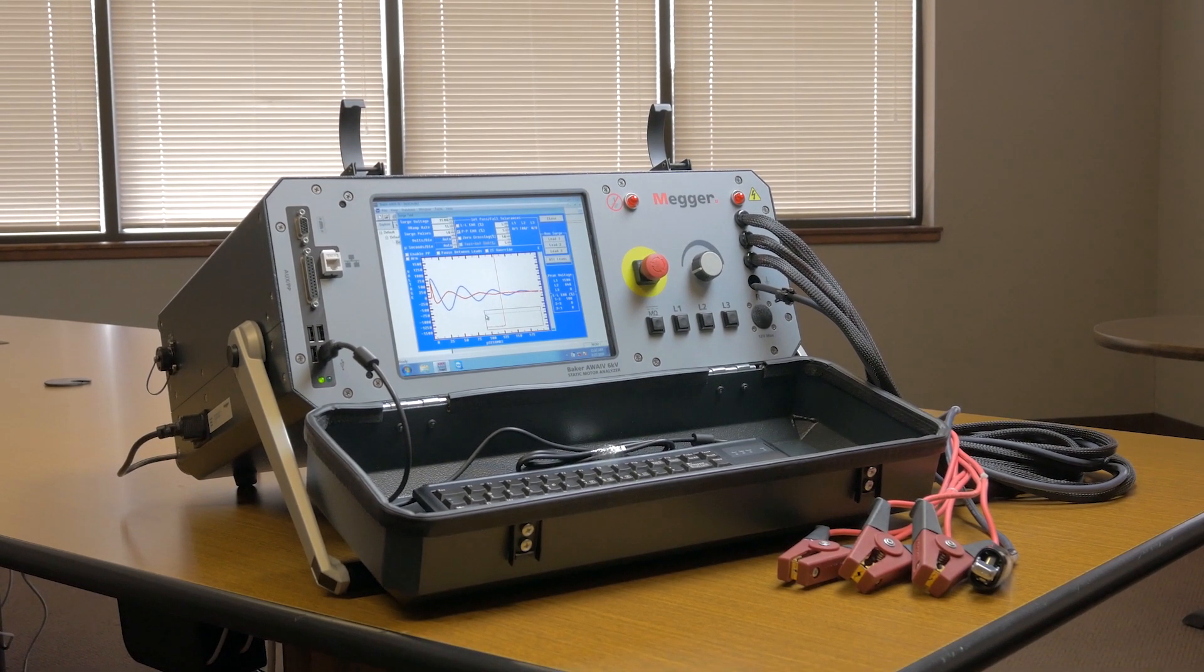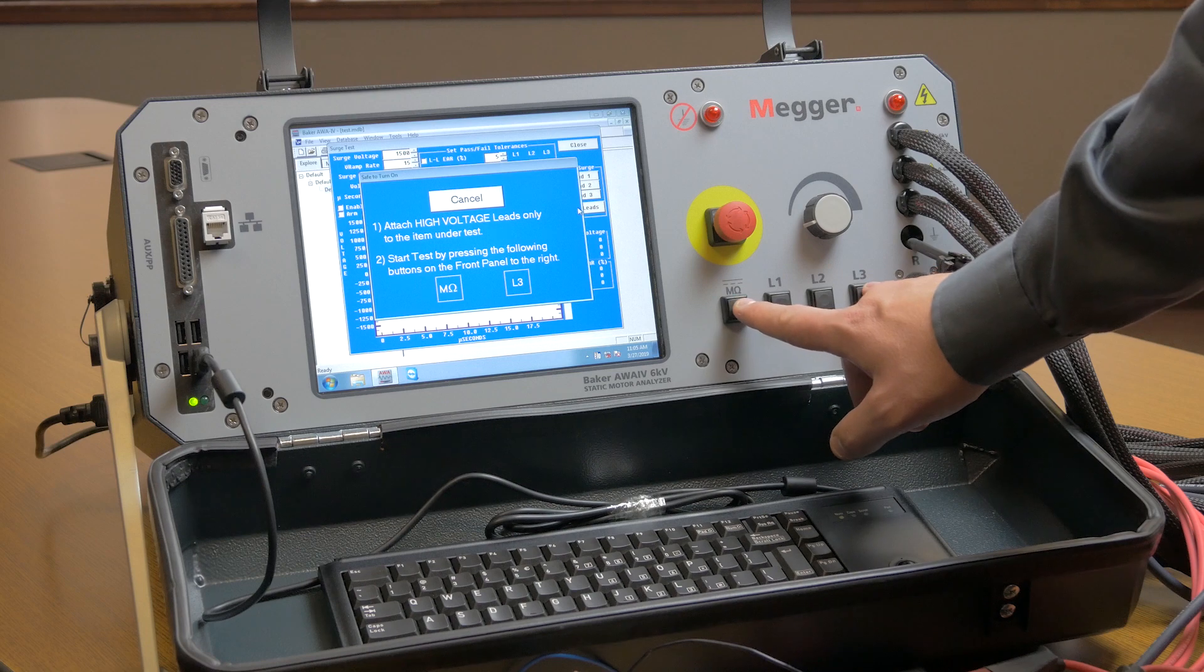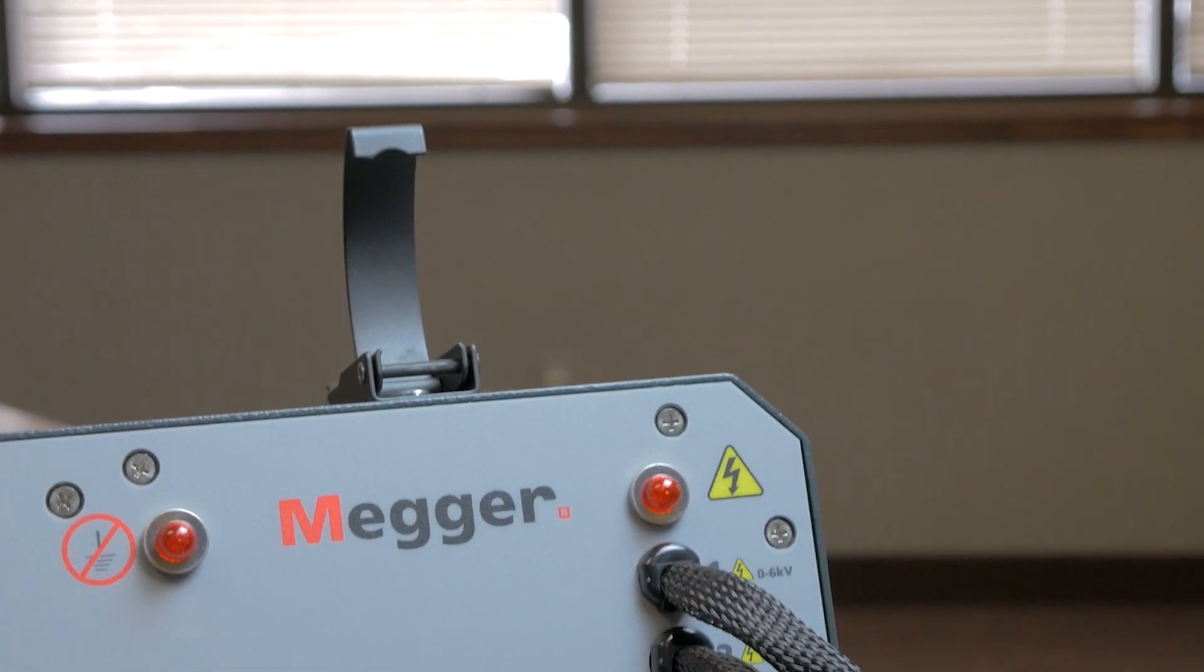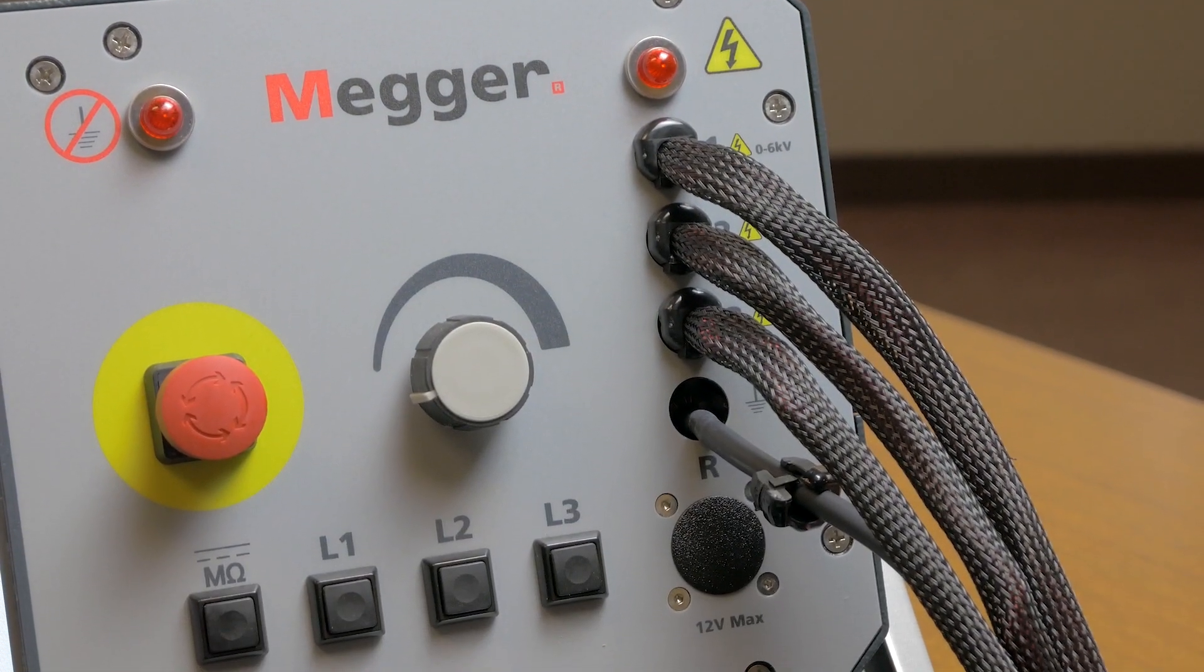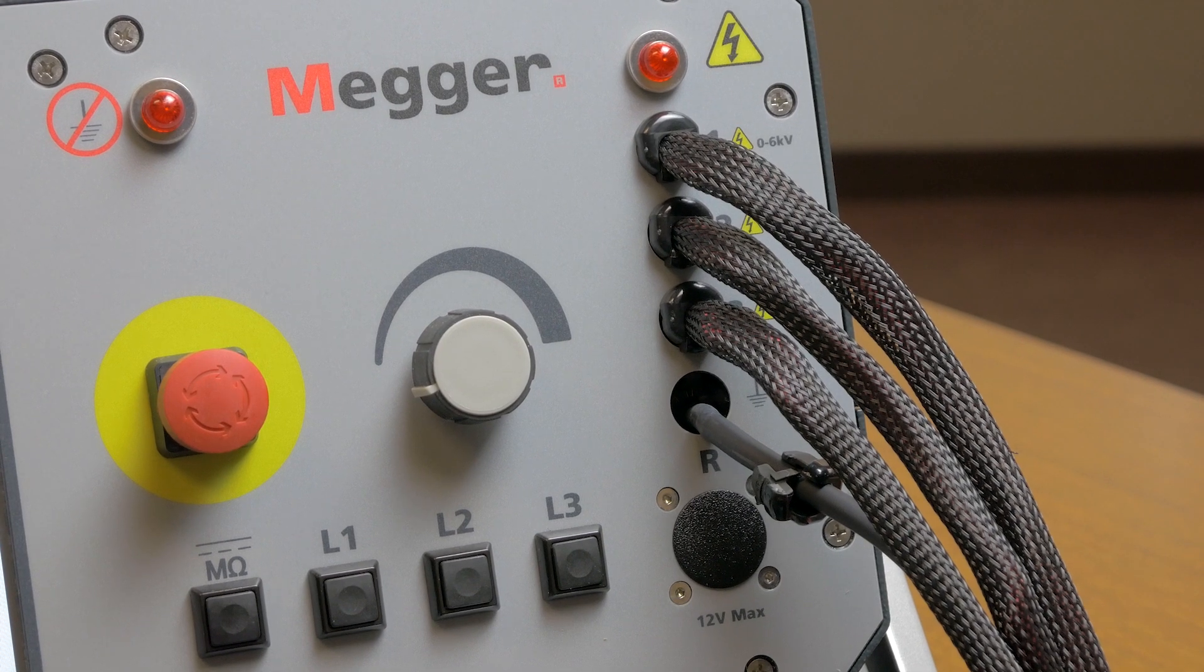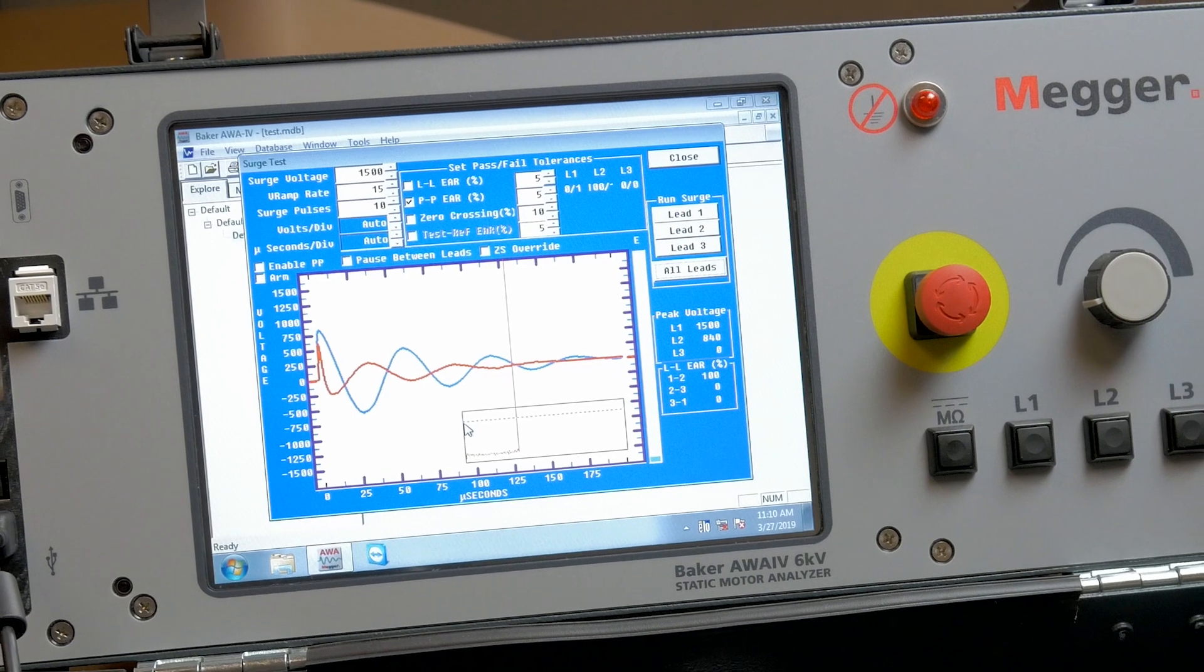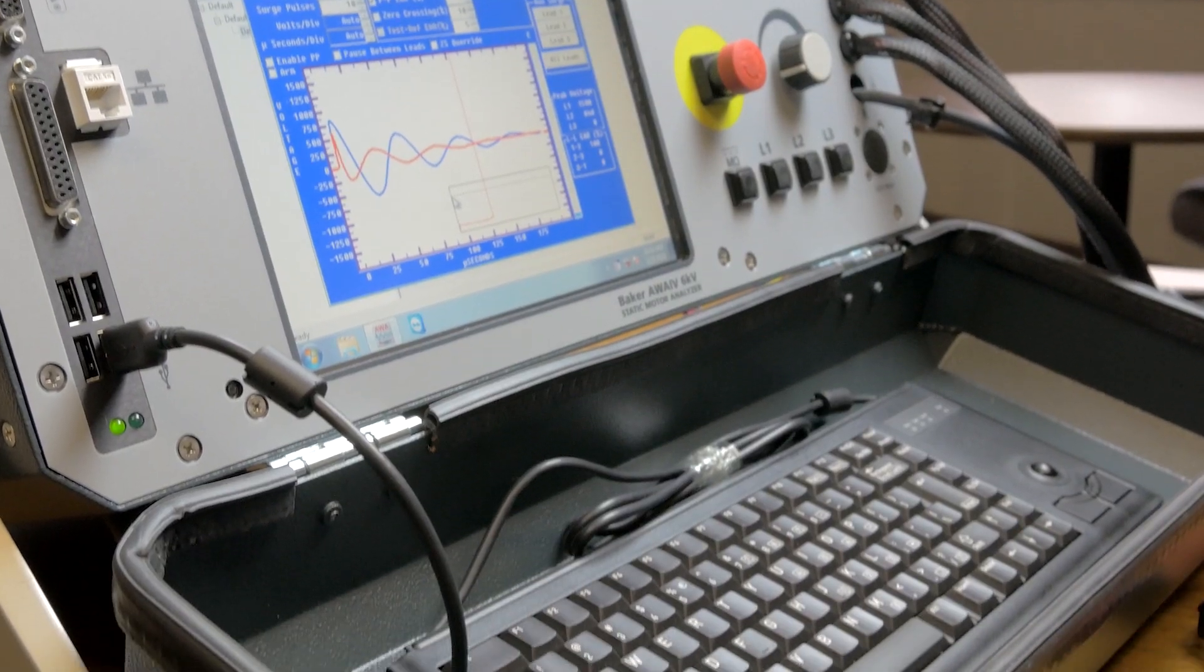The Baker AWA is a fully automated windows-based analyzer with complete insulation testing capabilities. Since it is automated, you can be assured that the testing is consistent and the results are repeatable regardless of who is doing the testing. The AWA has three switched test leads, so all three phases of the motor can be tested without reconnecting the leads. A color touchscreen interface and familiar Windows operating system make this tester easy to use.